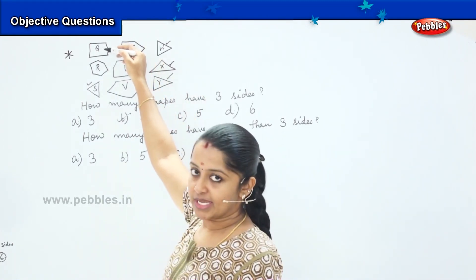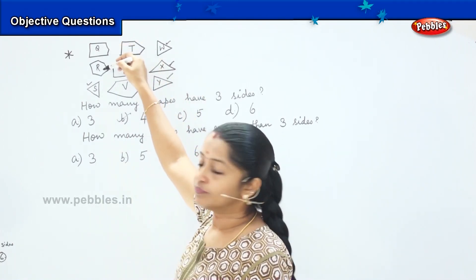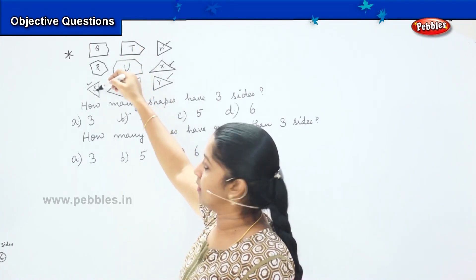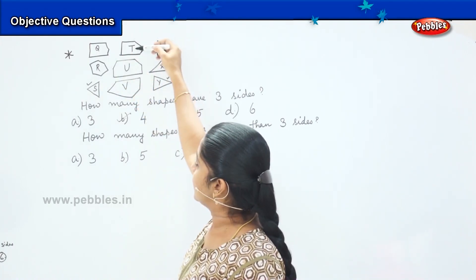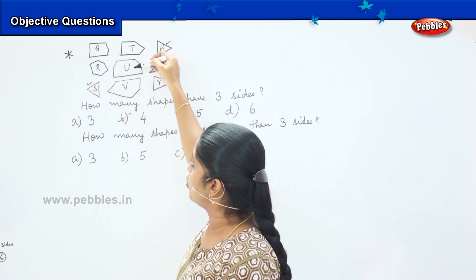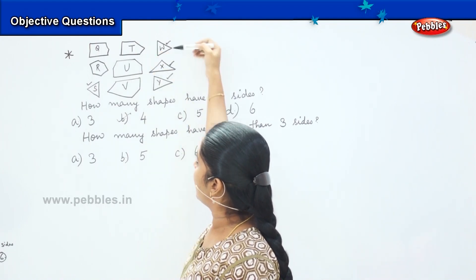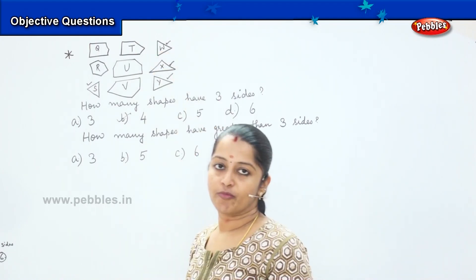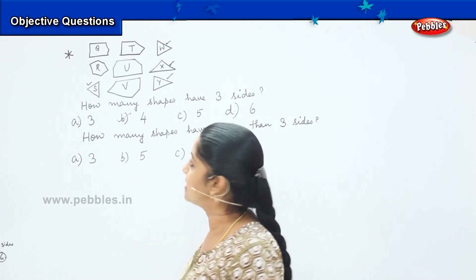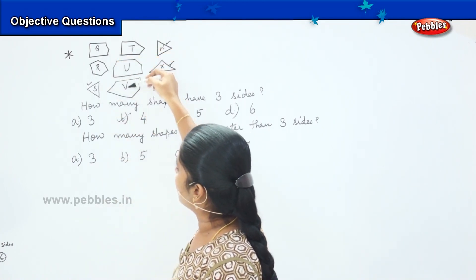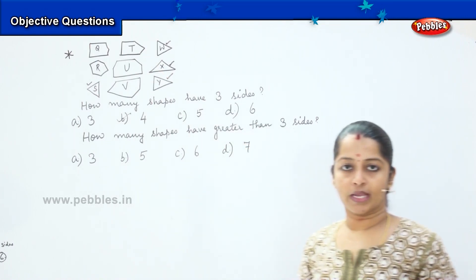The first one will come? Yes. Second one? Yes. Third one? No. The T, U, V, and these three are triangles. So, how many of them are having more than three sides? It's one, two, three, four, and five.